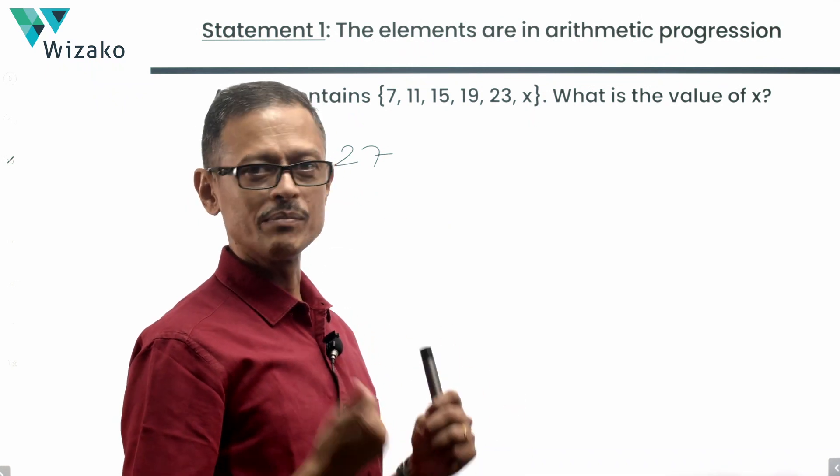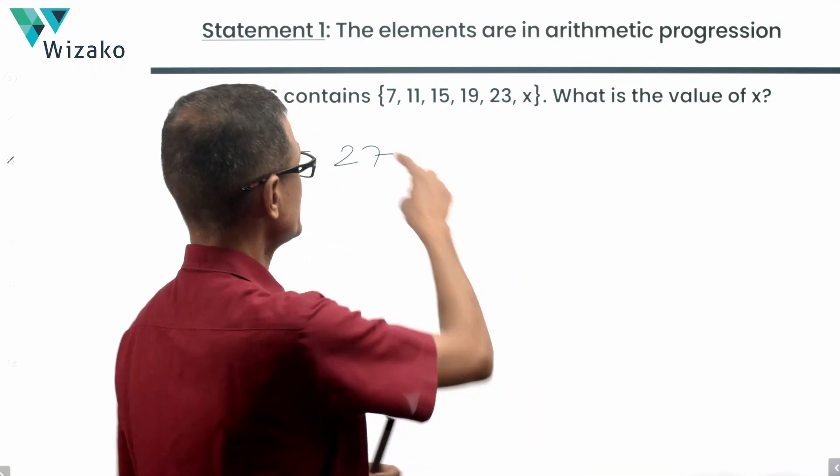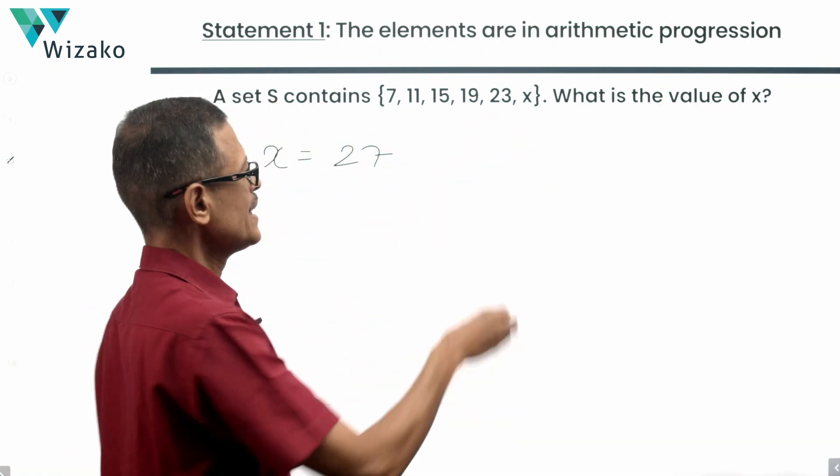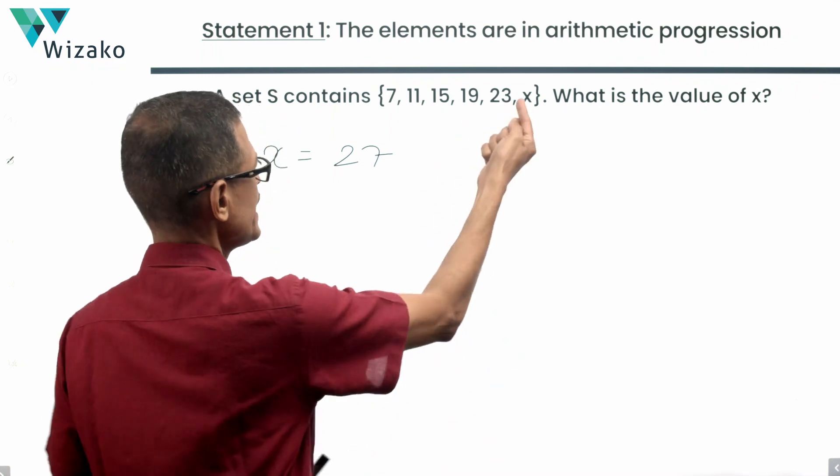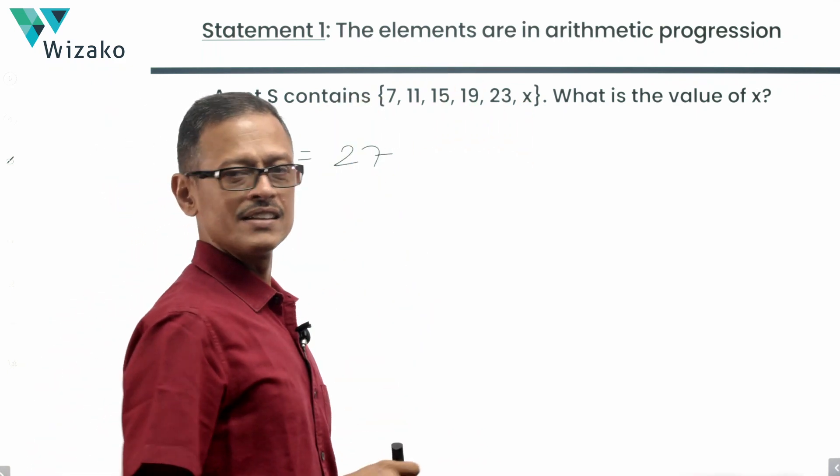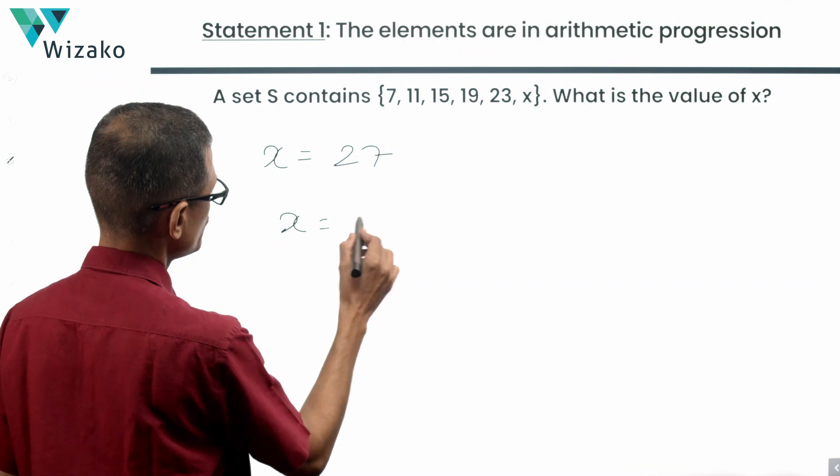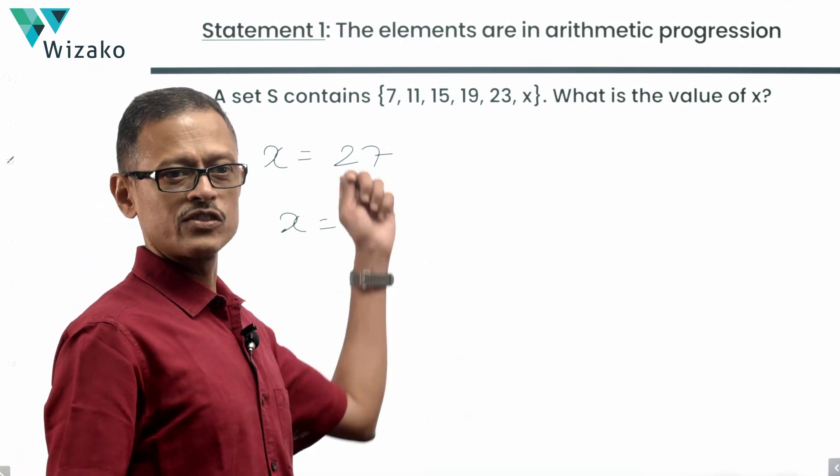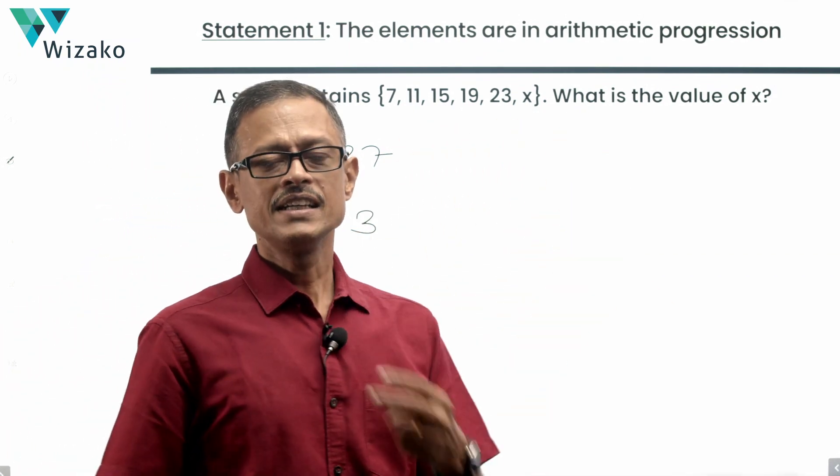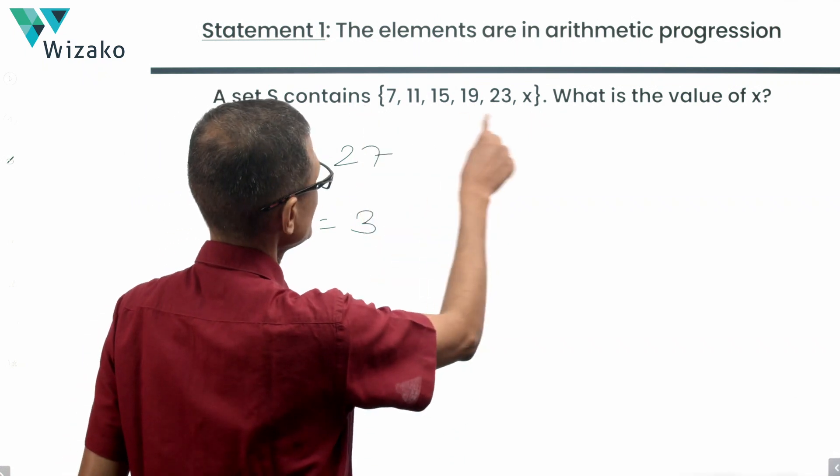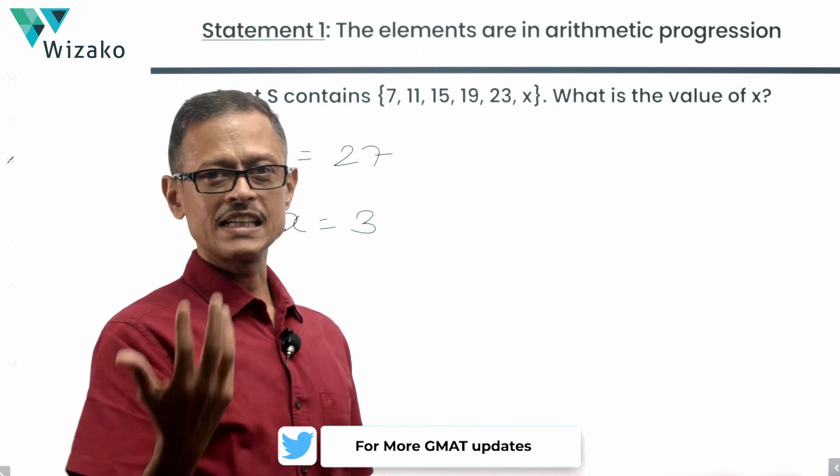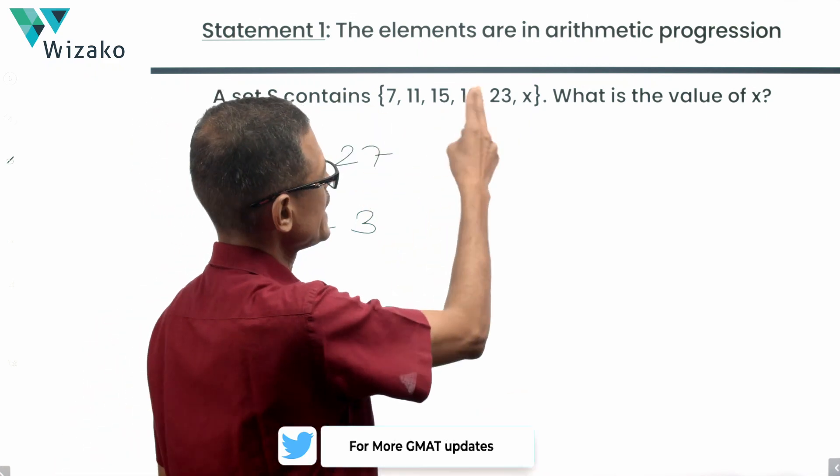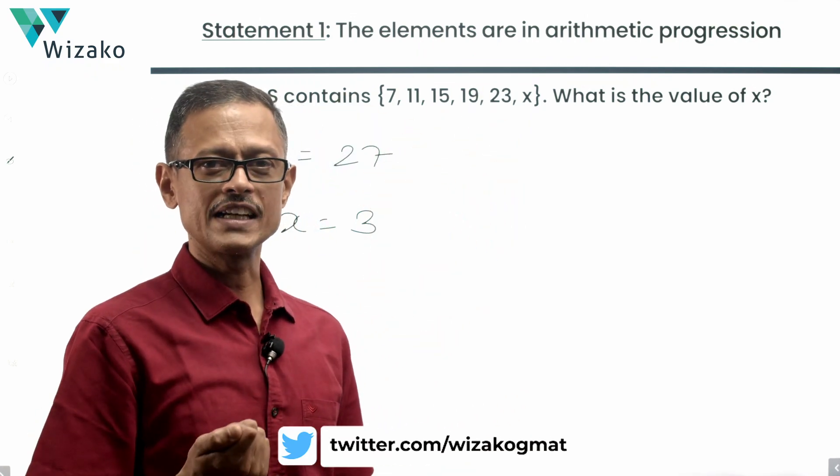Did someone say that x is a number after 23 and this arithmetic progression is necessarily written in ascending order? However, no one mentioned that. If these terms are all in an arithmetic progression, x could be the term that's here after 23. x could very well be the term which is before 7. In that case, x could very well be equal to 3. So x could be 3 or x could be 27. In both cases, we'll find the elements in this set being in an arithmetic progression because 3, 7, 11, 15, 19, 23 is in an AP. 7, 11, 15, 19, 23 and 27 is also in an AP.